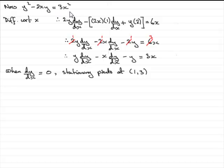I showed you that we could find the stationary point by differentiating the equation, and we did, and we got these lines here. When dy/dx equals 0, the stationary points were 1 and 3, x equals 1, y equals 3.